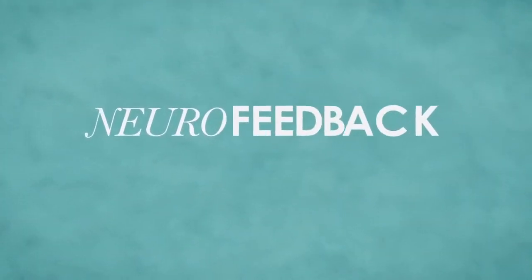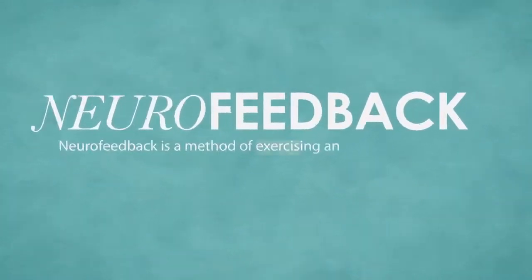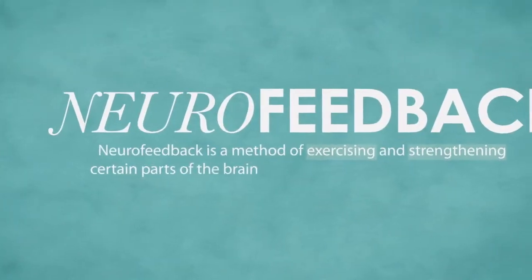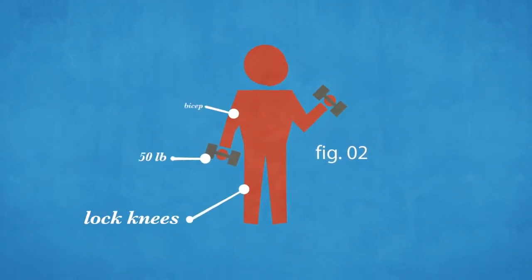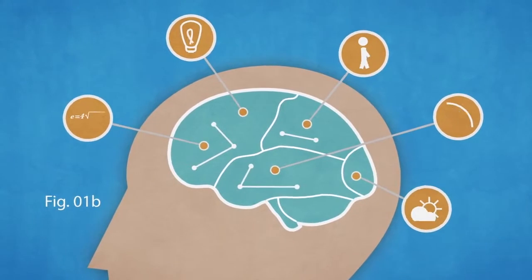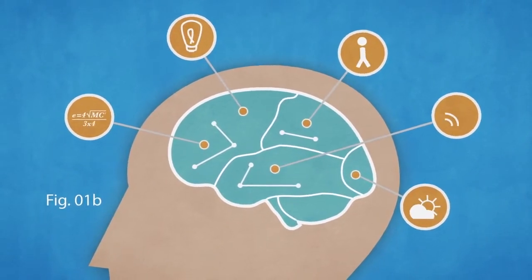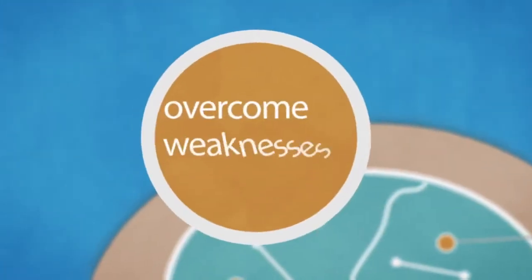It is called neurofeedback. Neurofeedback is a method of exercising and strengthening certain parts of the brain so that it can learn to function better. Just like repeatedly working out at the gym will train the body and make certain muscles stronger, neurofeedback will alter the structure and function of the brain so that it can learn how to self-regulate and overcome weaknesses.